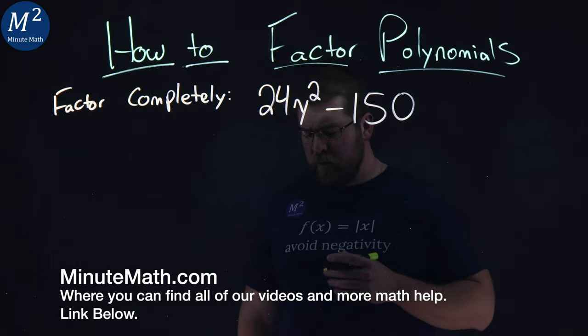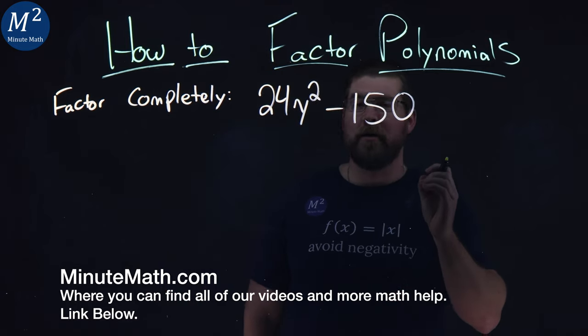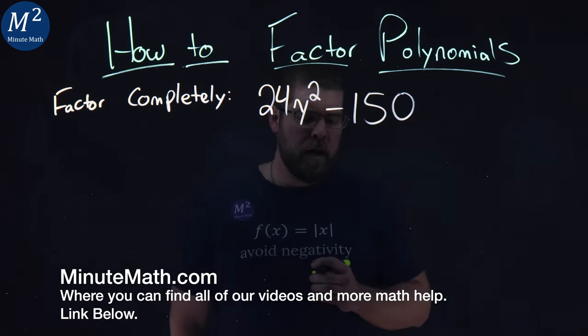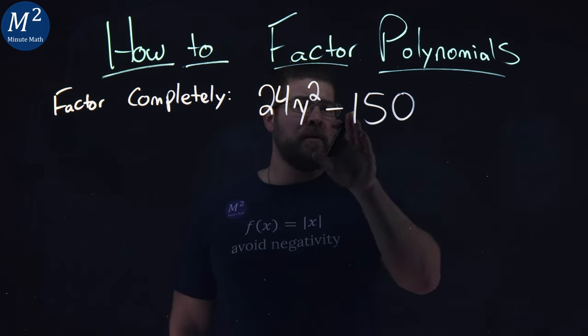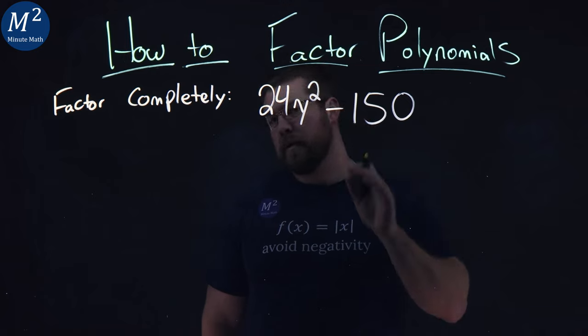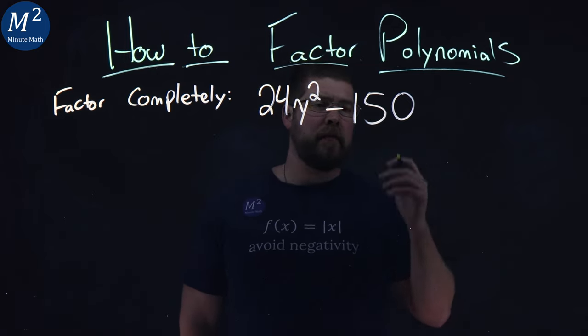We're given this problem here. Factor completely 24y squared minus 150. Now the first thing I'm looking at here is what number really goes into both parts here, our greatest common factor.